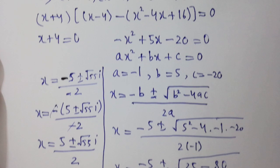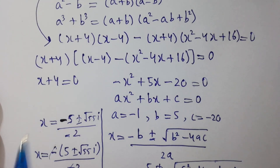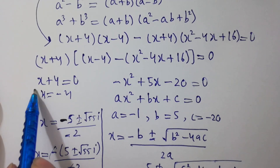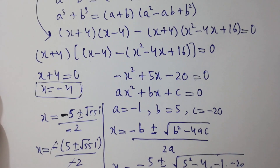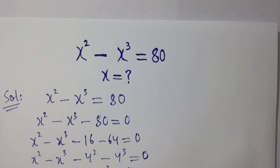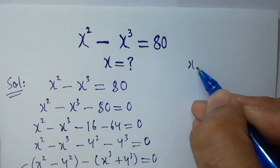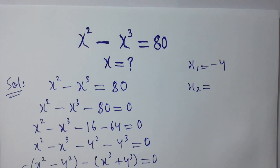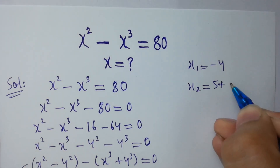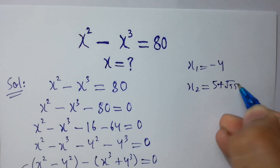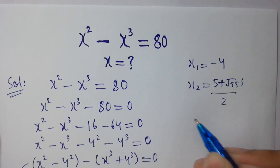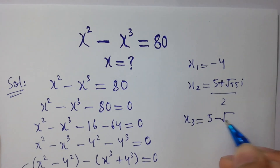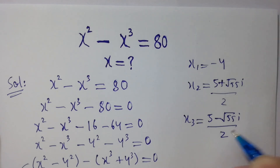So the three solutions are: x1 equals negative 4 (from x plus 4 equals 0), x2 equals (5 plus square root of 55i) divided by 2, and x3 equals (5 minus square root of 55i) divided by 2.